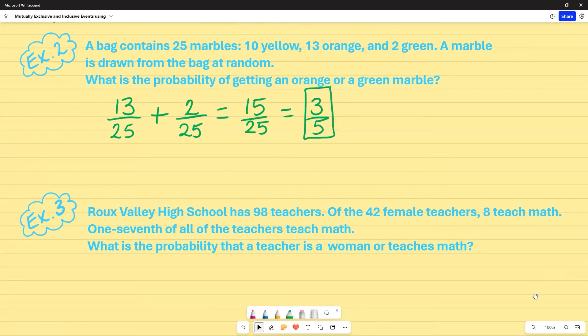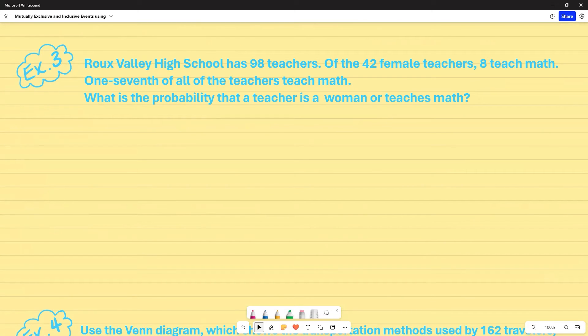So the next example, Roux Valley High School has 98 teachers. Of the 42 female teachers, eight teach math. One seventh of all of the teachers teach math. What is the probability that a teacher is a woman or teaches math? So now in this case, I can actually use the inclusive addition rule because you can be both a woman as well as teach math. So that is called inclusive. The first two were mutually exclusive. You couldn't do both at the same time.